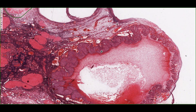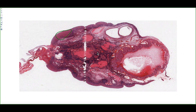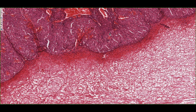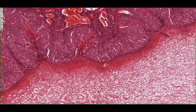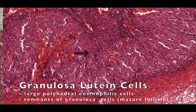If we zoom in, we can see the two different cell types that are found within the corpus luteum. The first thing we can see is these large eosinophilic staining cells. These are the granulosa lutein cells, which are remnants of the granulosa cell layer that we saw in the mature follicle.